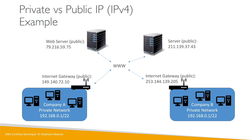Another company will also have its own private network where every computer can talk to one another, and it may also have an internet gateway with an IP to connect over the internet and talk to other servers. The key difference is that a public IP means you're accessible over the internet, while a private IP means you're only accessible within your private network.